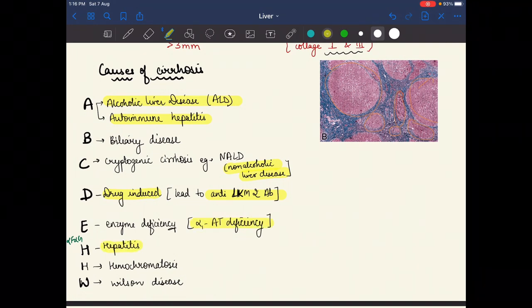H for hepatitis. We can make I into the H, that is hemochromatosis, and W stands for Wilson's disease. So the causes of cirrhosis are alcoholic liver disease, non-alcoholic liver disease, autoimmune hepatitis, drug induced, alpha antitrypsin deficiency, hepatitis, hemochromatosis, and Wilson's disease.